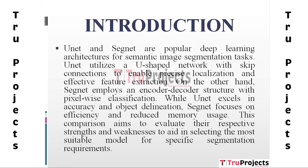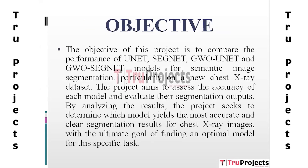The objective of this project is to assess how well the UNet, SegNet, GWO-UNet, and GWO-SegNet models perform at semantic image segmentation, particularly when applied to a chest X-ray dataset. The project aims to evaluate each model's segmentation outputs and accuracy in order to find the best model for this particular task, identifying which produces the most precise and understandable segmentation results.